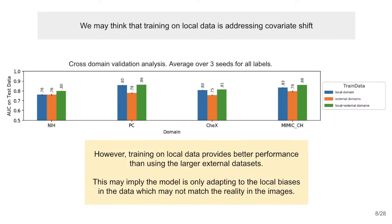We may think that training on local hospital data is addressing covariate shift. This experiment looks at training on local data only in blue, using only external data from the other datasets in orange, and using both local and external in green. The external data contains many more samples than the local data, yet combining it with the local data provides almost the same performance as training on the local data alone. This may imply that the model is only adapting to local biases of the dataset and not necessarily addressing covariate shift.